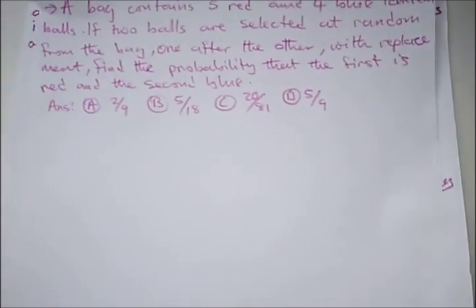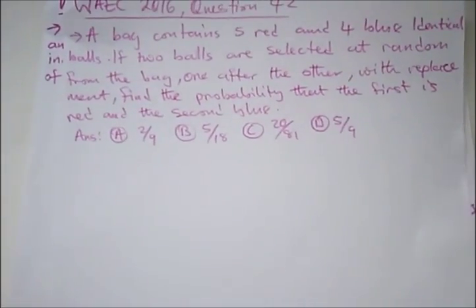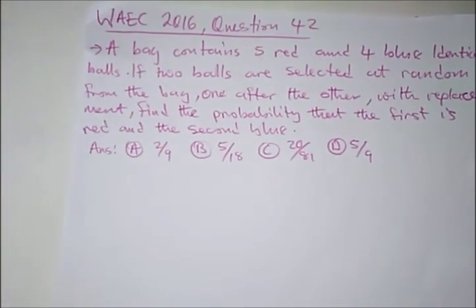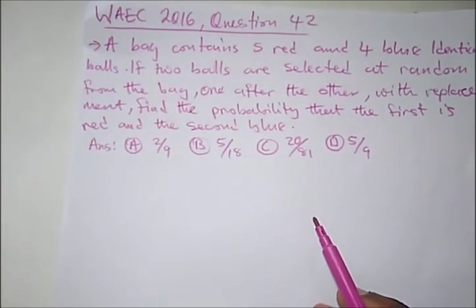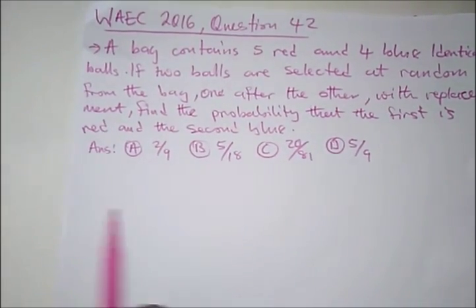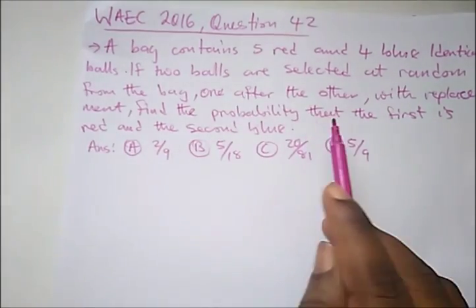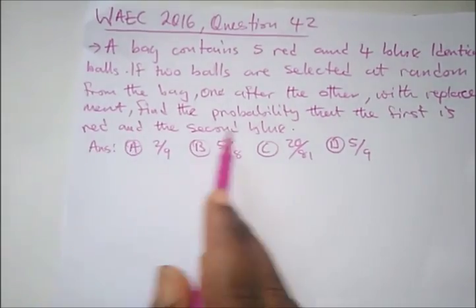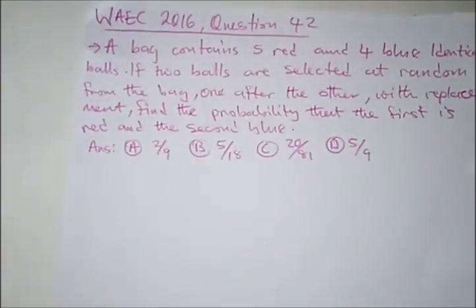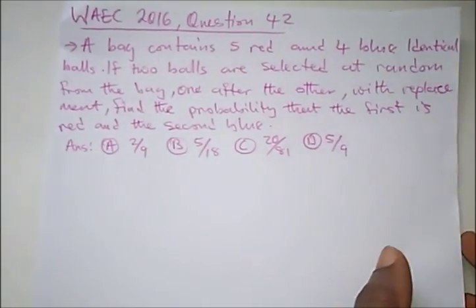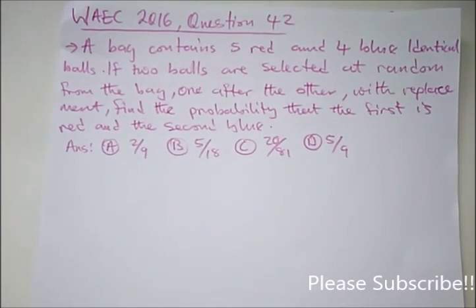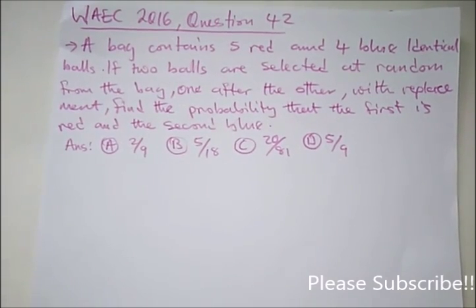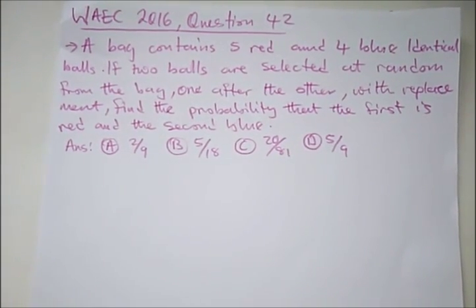Here we have another question, 2016 question 42. It says, a bag contains 5 red and 4 blue identical balls. If 2 are selected at random from the bag, one after the other, with replacement, find the probability that the first is red and the second is blue. So this is a question with replacement, so it's an independent event. If it was without replacement, it would be a dependent event. So they said we should find probability that the first is a red ball and the second is a blue ball.